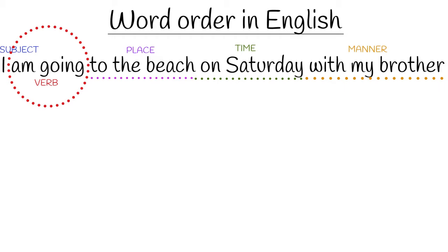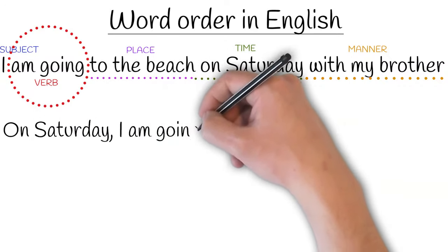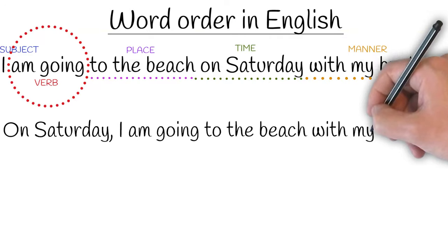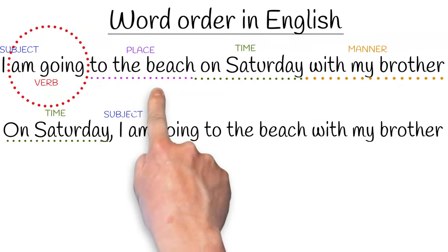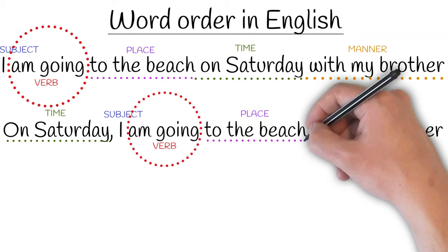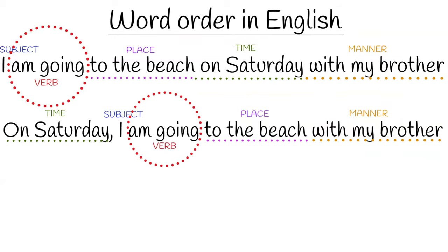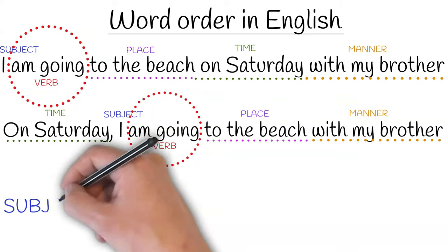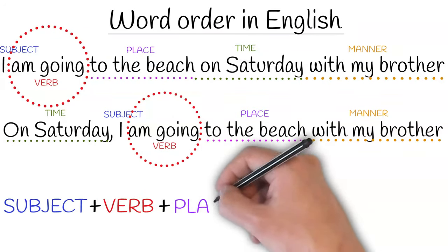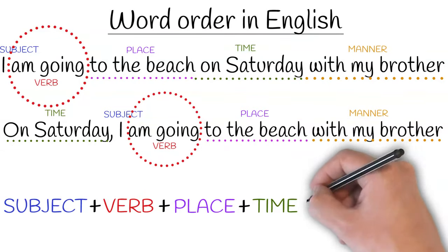What we mean by manner is just how this action is accomplished — any additional information about the action. Now, of course, we could change this in English, and often we do, by putting the time at the start of the sentence. So, for example: 'On Saturday, I am going to the beach with my brother.' In this case, we just separate the time from the rest of the sentence and continue as usual. The pattern of word order we notice in English is: subject, then verb, then place, then time, then manner.